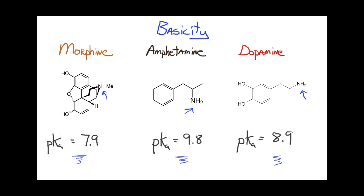In other words, the pKa for morphine is actually for the protonated version of morphine. For amphetamine, I would change this number to a three when it's protonated and put a positive charge on the nitrogen. And the same here for dopamine, I would change that to a three protonating that nitrogen.